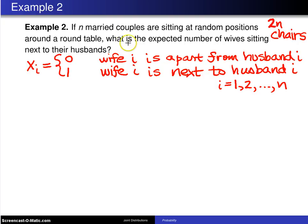Now, in this case, if we want the expected number of wives sitting next to their husbands, that is to say, we want the expected value of the sum from i equals 1 to n of x sub i.